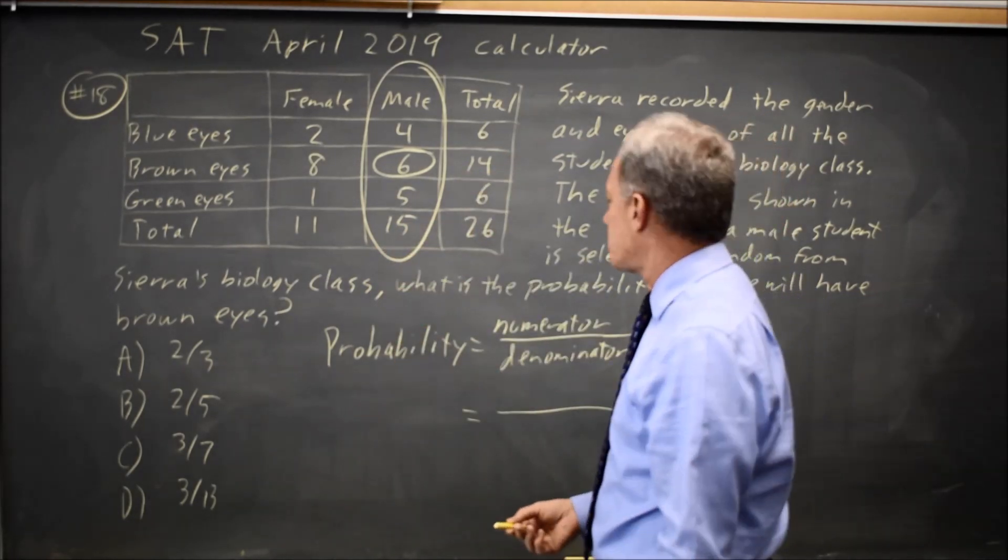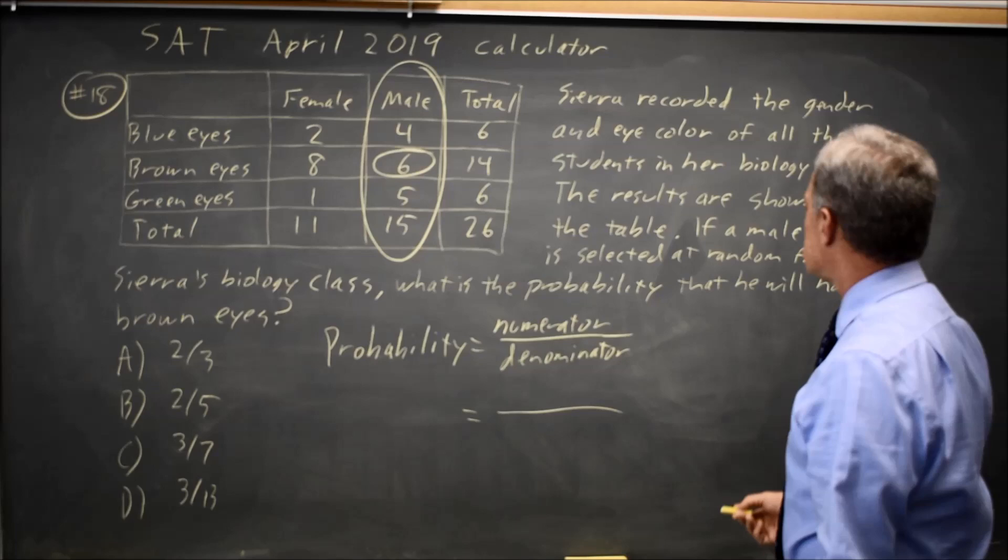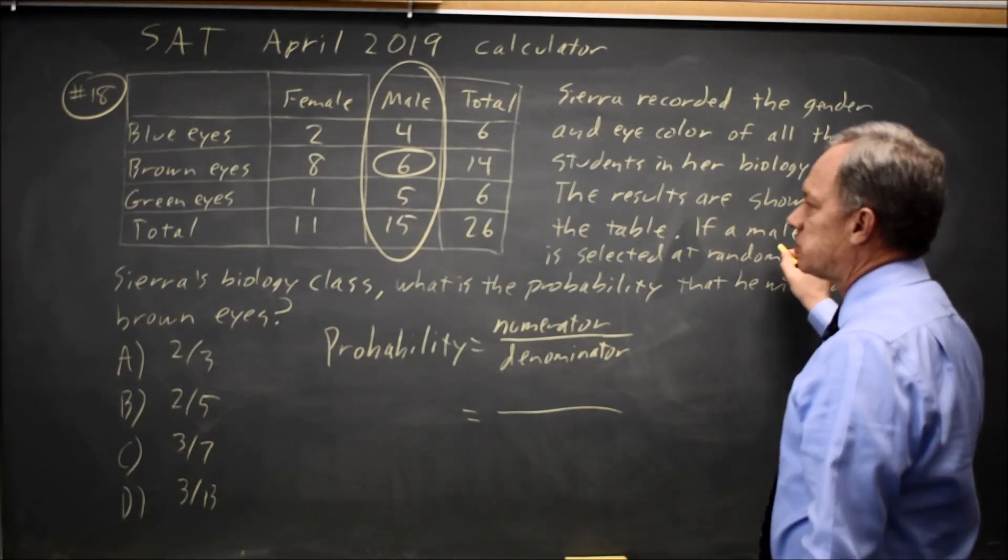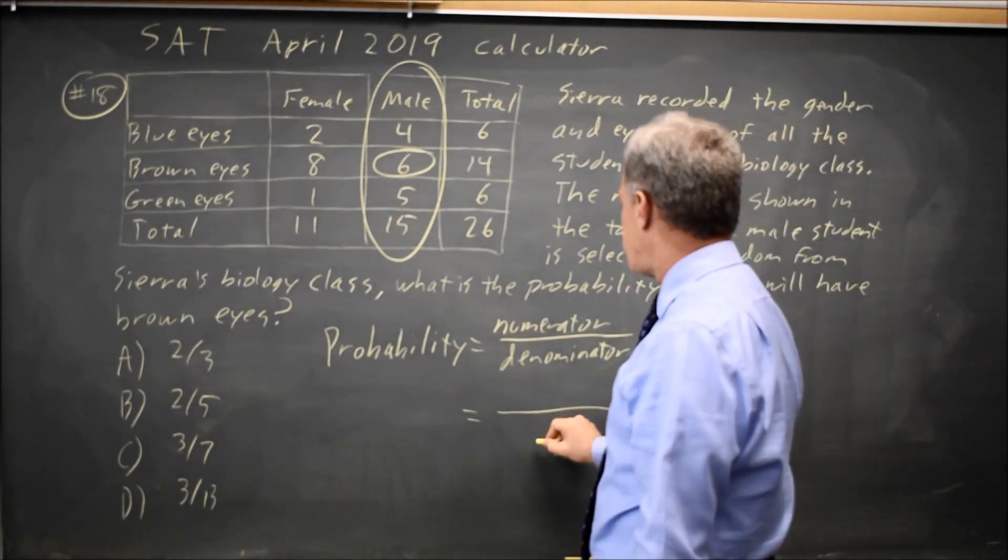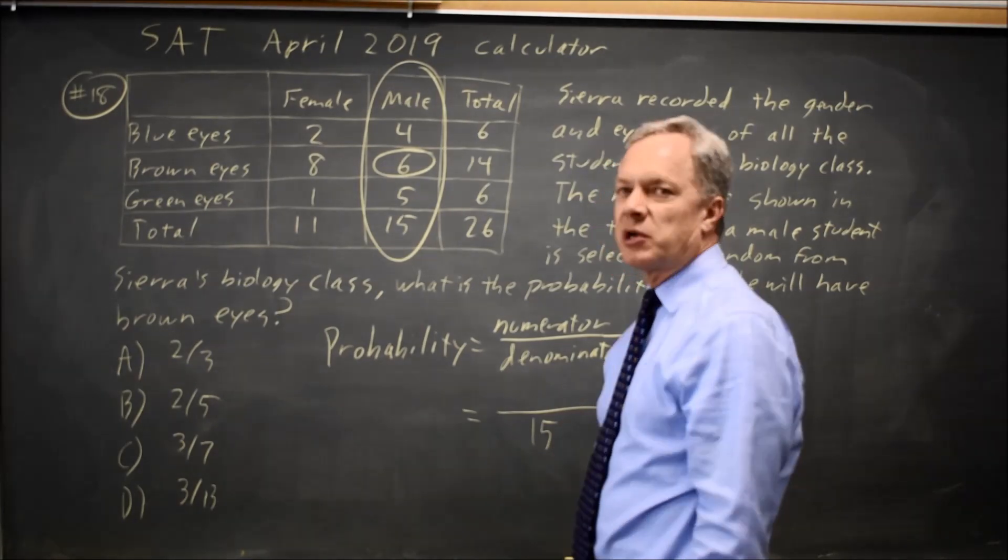In this case, it's one column. We're told that this is a male student that's selected, so there are a total of 15 individuals who might have been chosen.